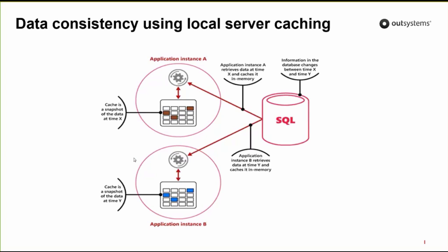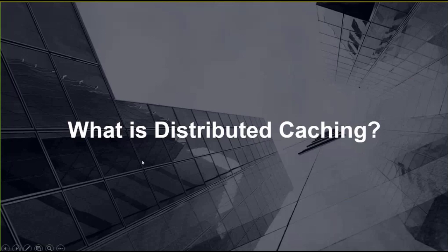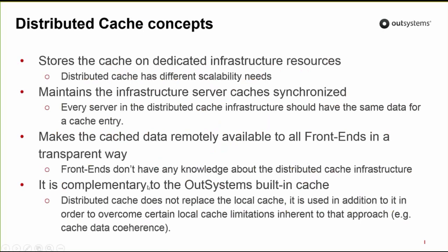I hope you understand the problem described here, so I can introduce how distributed caching is going to help solve these problems. Let me explain some of the differences against local cache. First, a distributed cache stores data in a dedicated infrastructure — usually servers with the single purpose of storing cached data — hence it does not share resources with the OutSystems front-end servers. This allows the distributed cache infrastructure to scale independently. Secondly, and most importantly, a distributed cache has mechanisms to keep all cache servers synchronized, so the cache state should be the same across all servers at any point in time.